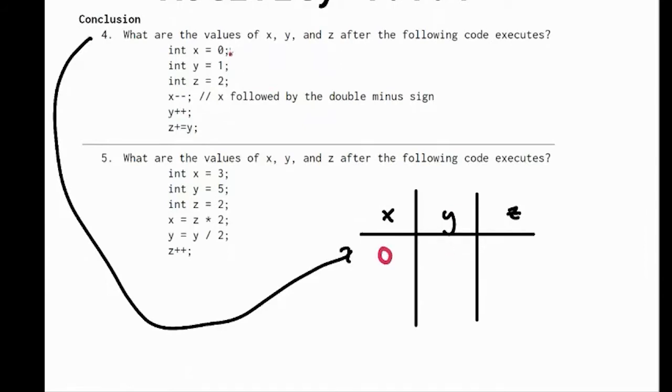So it says x is 0, so I'm just going through like a computer, first line of code. Next line of code, y is 1, so I'm going to put a 1 in there. Then z is 2. I'm going to put that in there.